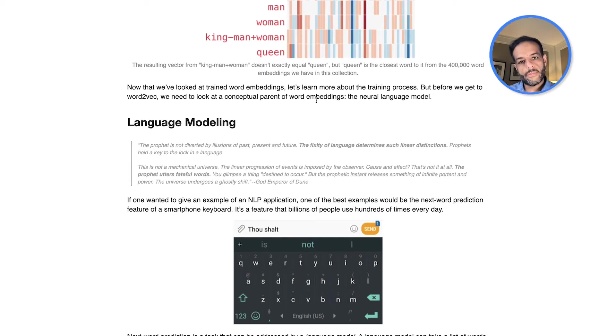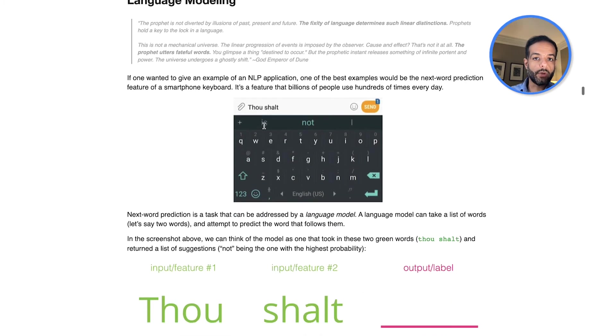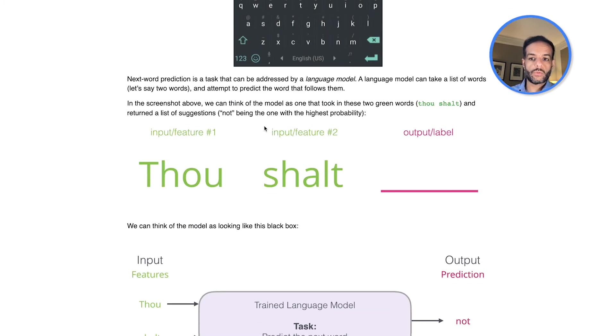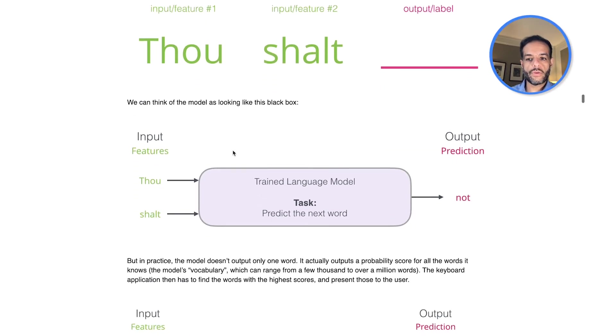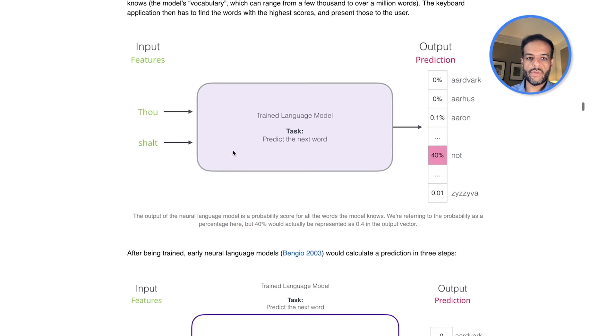And then we talk about the post goes deeper into language modeling, which is this concept used to be able to train these models. So it's predicting the next word. And we go a little bit deeper into how that works. So we give a model two input words, and it has to predict the third one. And from that, we can generate these embeddings.